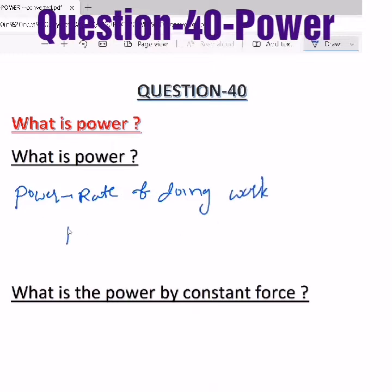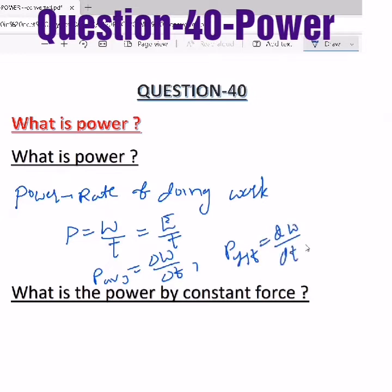Power is nothing but work by time, work is nothing but energy by time. Average power equals ΔW/Δt and instantaneous power equals dW/dt.